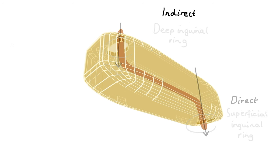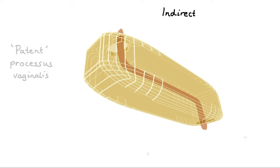In males, indirect inguinal hernias can only occur in the setting of a so-called patent processus vaginalis.